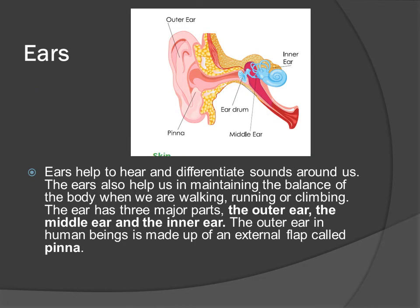Ears help us to hear and differentiate sounds around us. The ears also help us in maintaining the balance of the body when we are walking, running or climbing. The ear has three major parts: the outer ear, the middle ear and the inner ear. The outer ear in human beings is made up of an external flap called pinna.